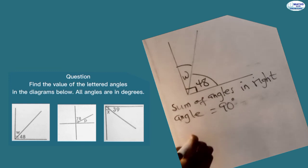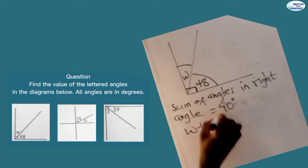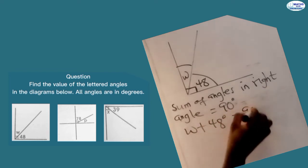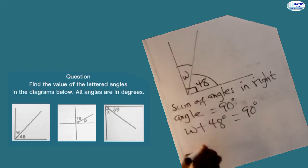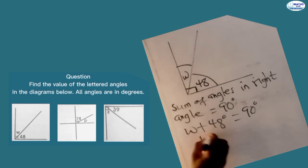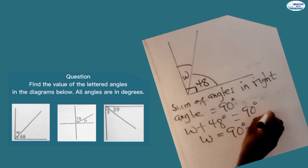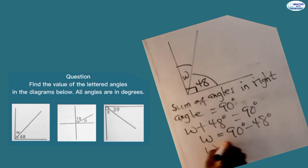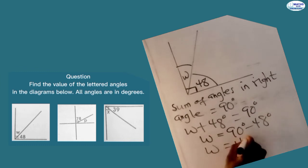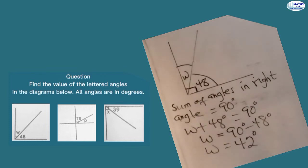We add the angles within the right angle, so we have W plus 48 degrees, and we equate them to 90 degrees. Now we make W the subject by grouping like terms: W equals 90 degrees minus 48 degrees. So W equals 90 minus 48, which gives us 42 degrees. That means the angle here is 42 degrees.